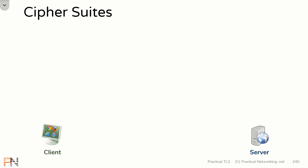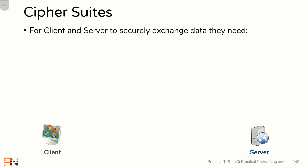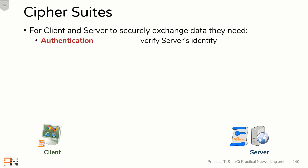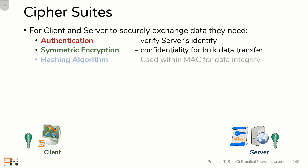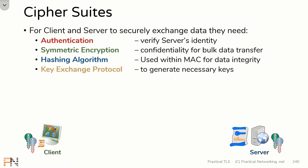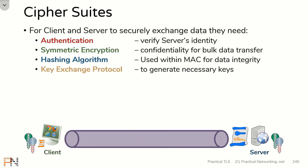Throughout this course, we've discussed that for a client and a server to securely exchange data with one another, there are four things that they need. First, they're going to need some sort of authentication in order to verify the server's identity. Then, they're going to need some sort of symmetric encryption in order to provide confidentiality for bulk data transfer between the client and the server. Then, they're going to need some sort of hashing algorithm, which they will use within a message authentication code for data integrity. And finally, since symmetric encryption and MACs require secret keys, we're going to need some sort of key exchange protocol to generate the necessary keys. If this client and this server have all four of these things, they have everything they need to securely speak to one another.